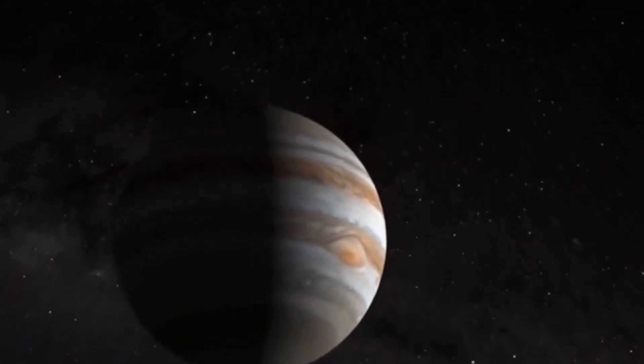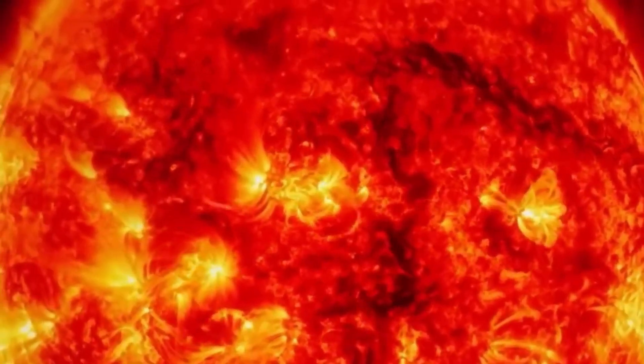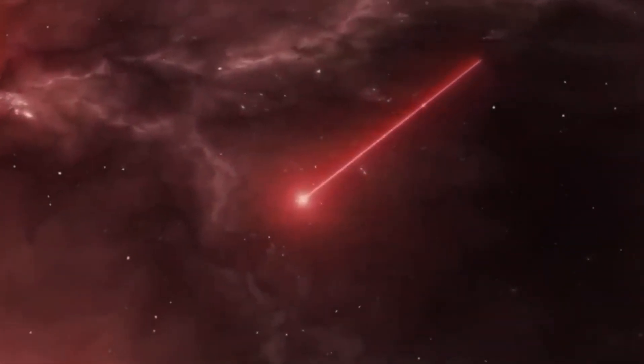However, he noted that the red curvature is real and represents a series of shells around WR140 in space. Although NASA is expected to have something to say about this, it is expected to make a statement soon.